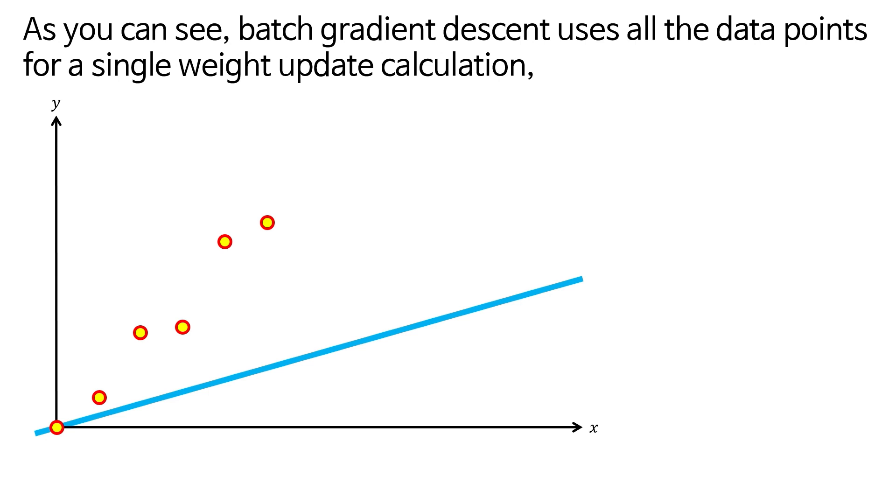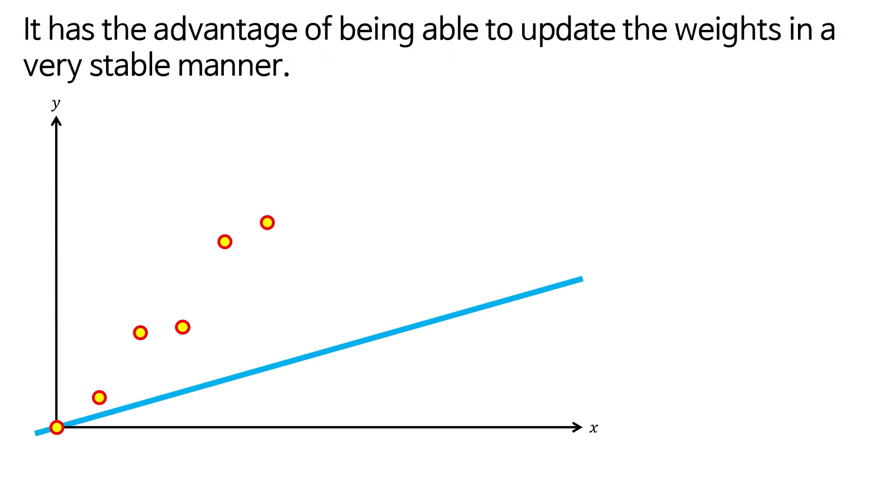As you can see, batch gradient descent uses all the data points for a single weight update calculation. It has the advantage of being able to update the weights in a very stable manner.